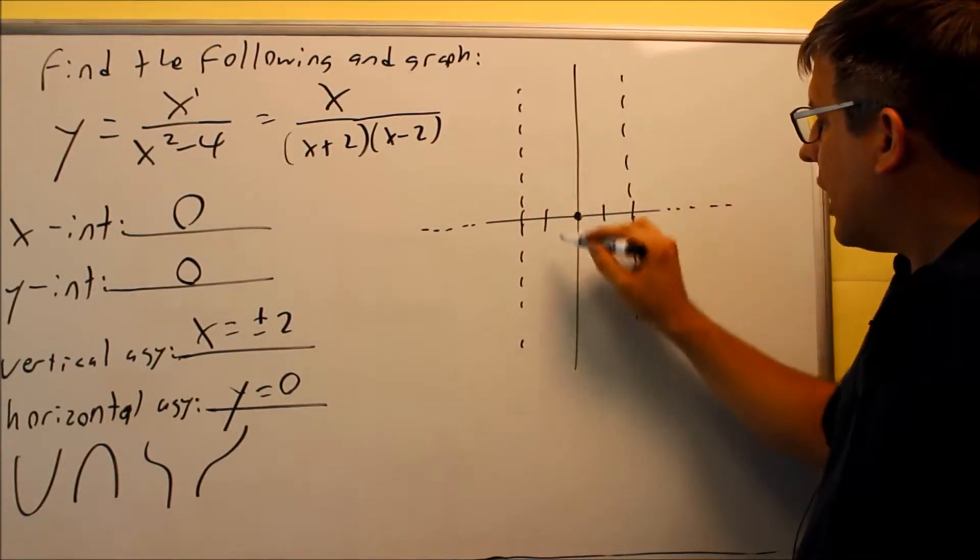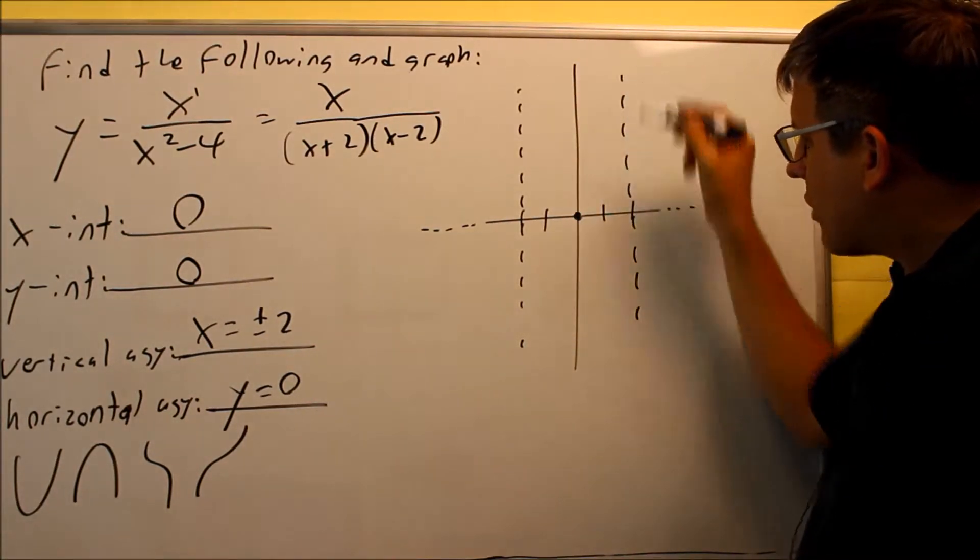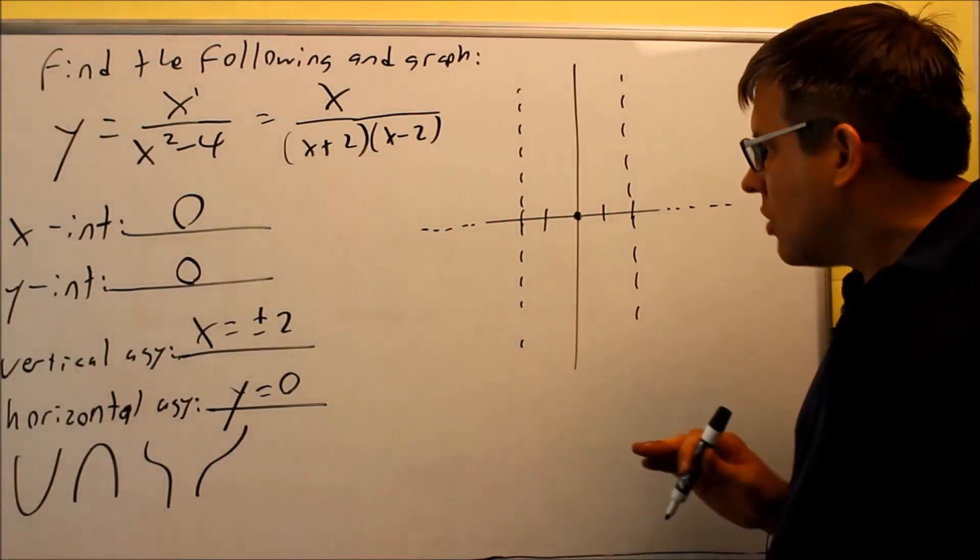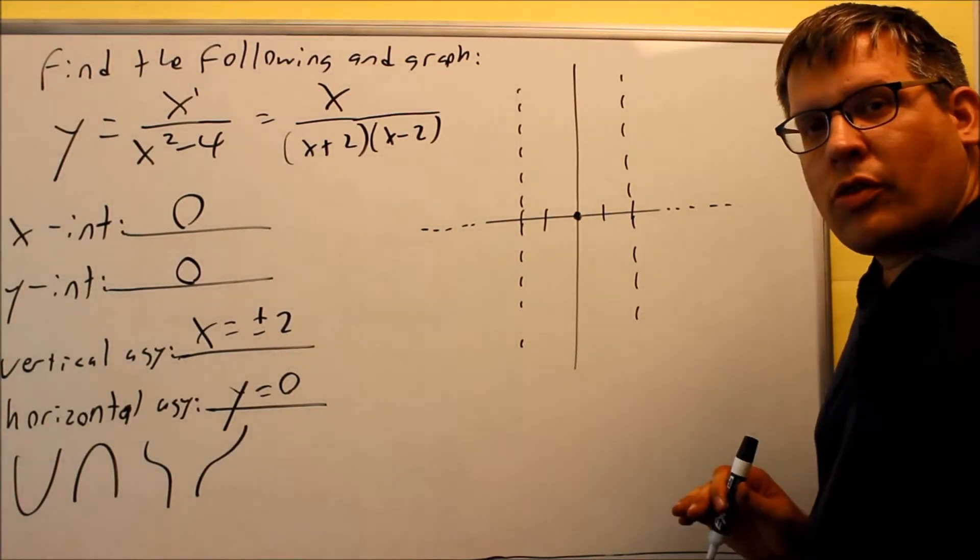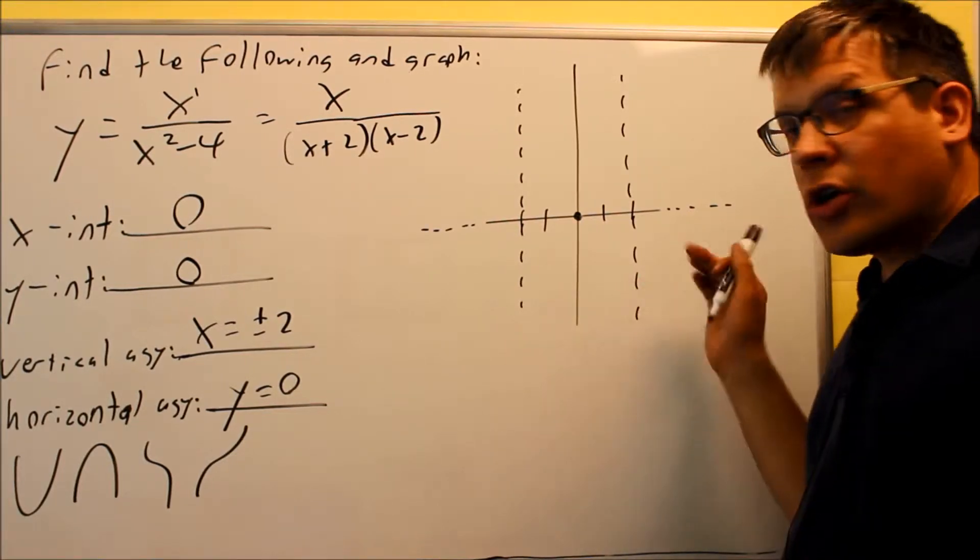So the parabola could actually come down and hit that. So this graph does not provide us enough information, so we have to use test points in order to determine where things are. So for this one, I'm actually going to have to use four different test points.